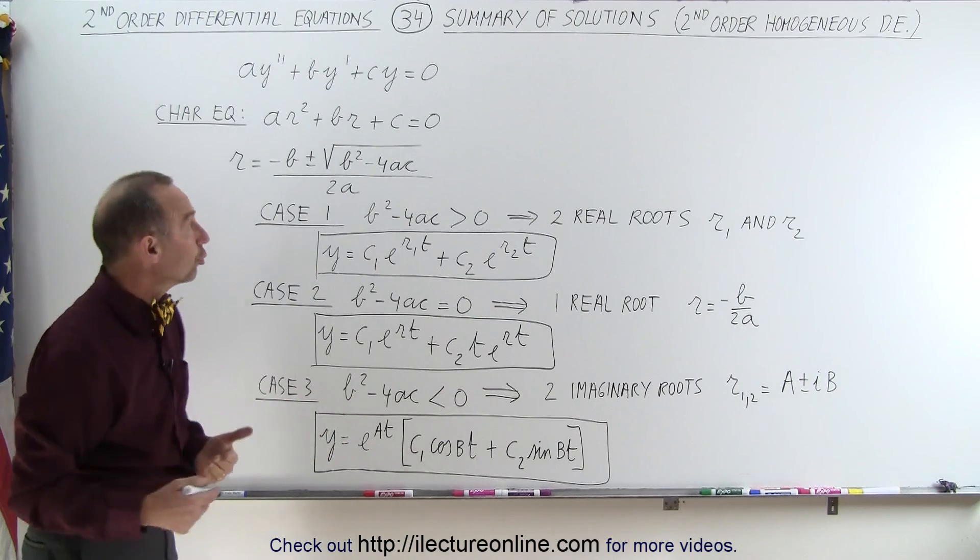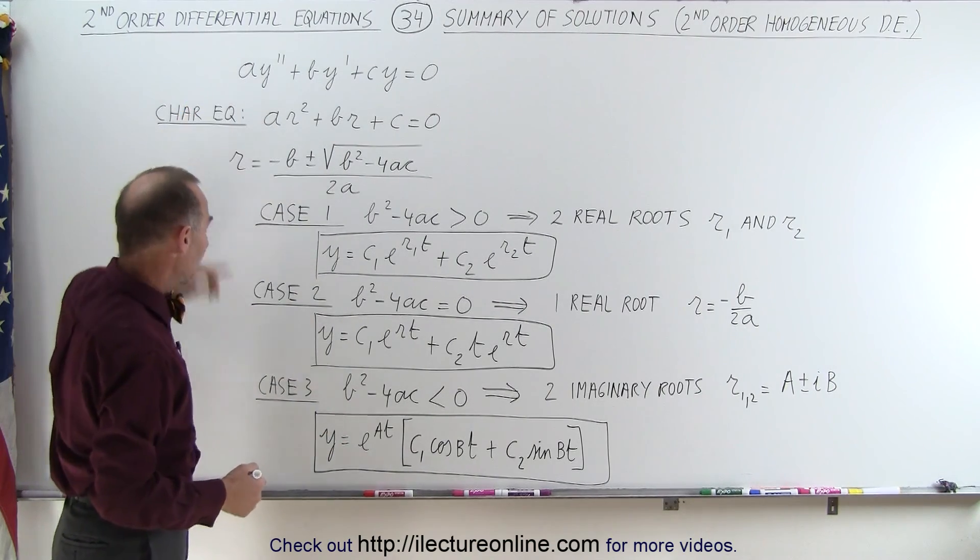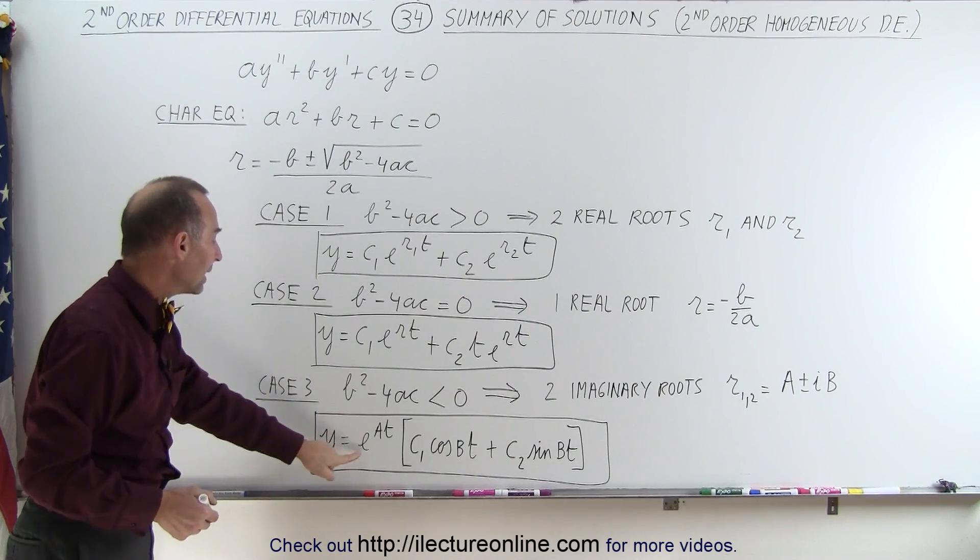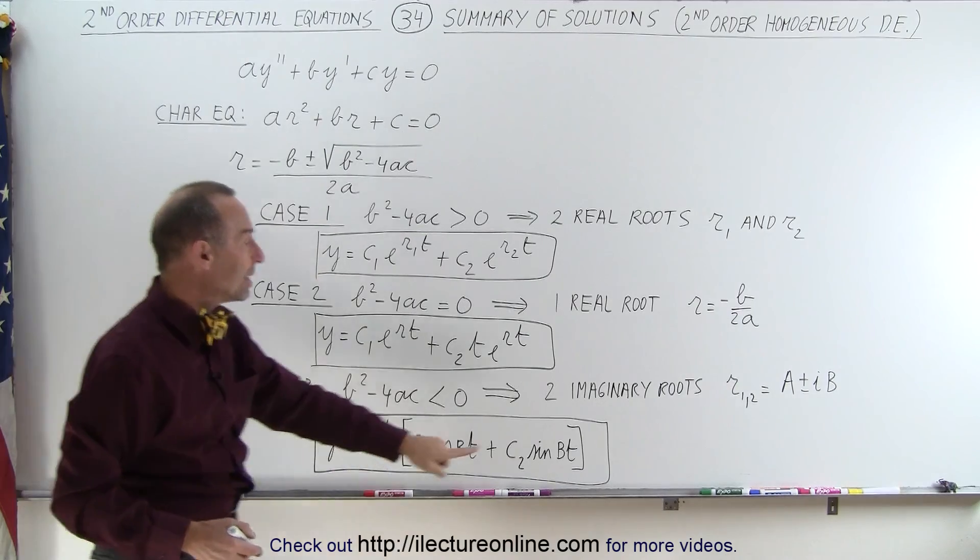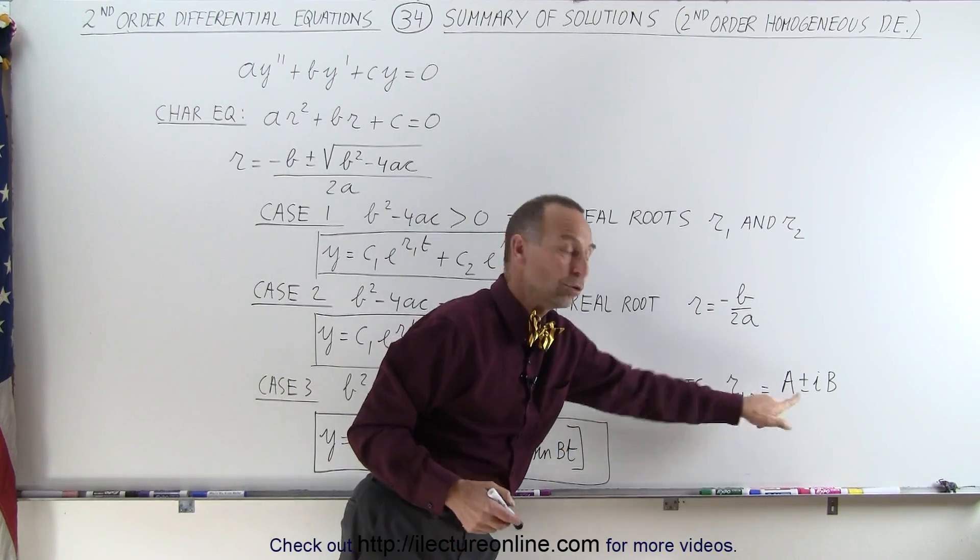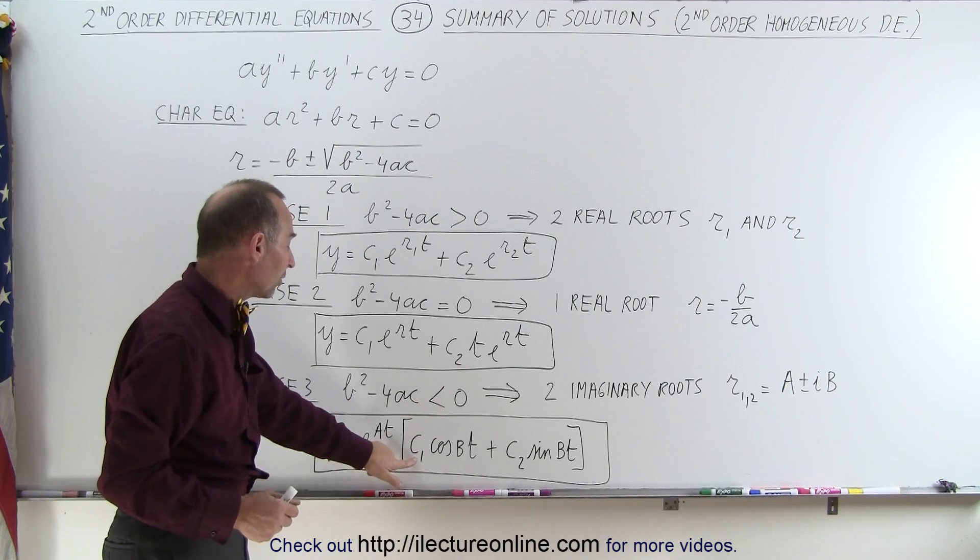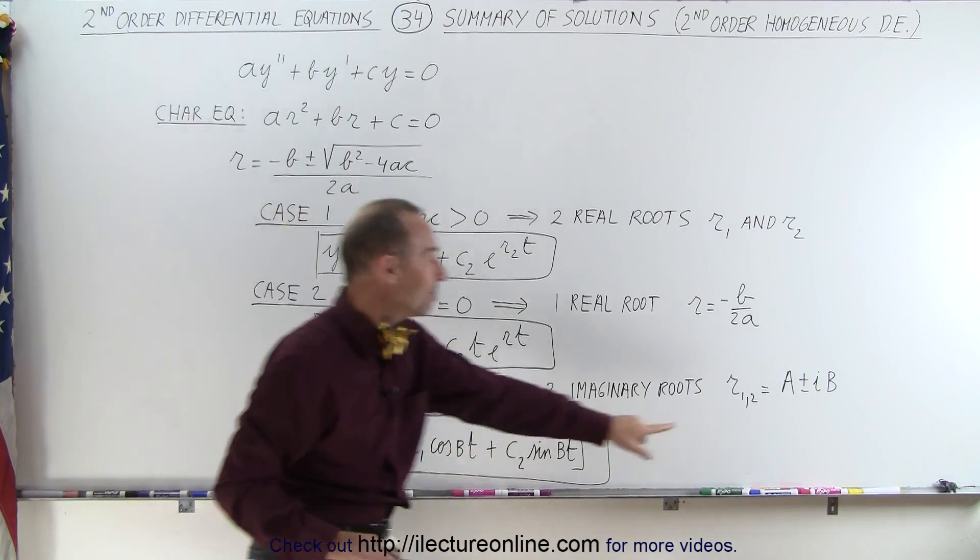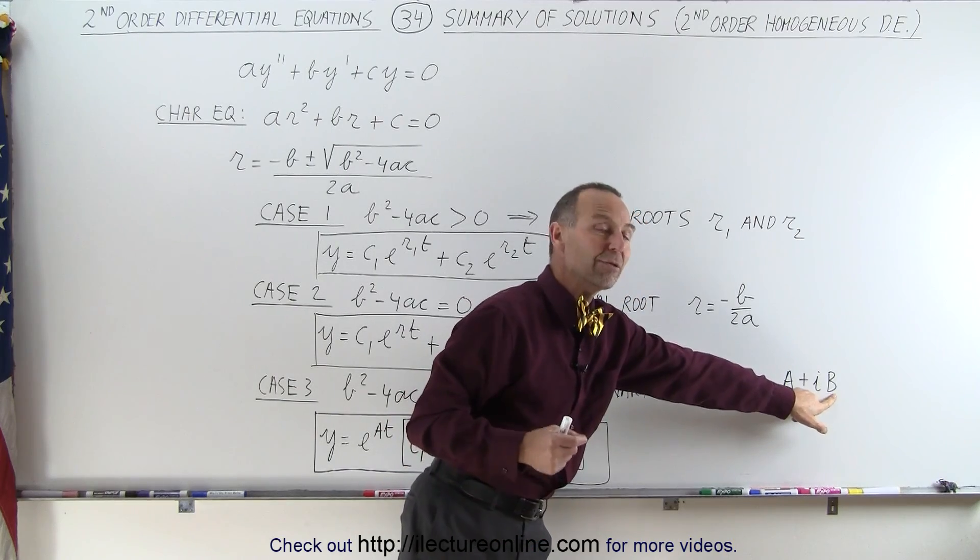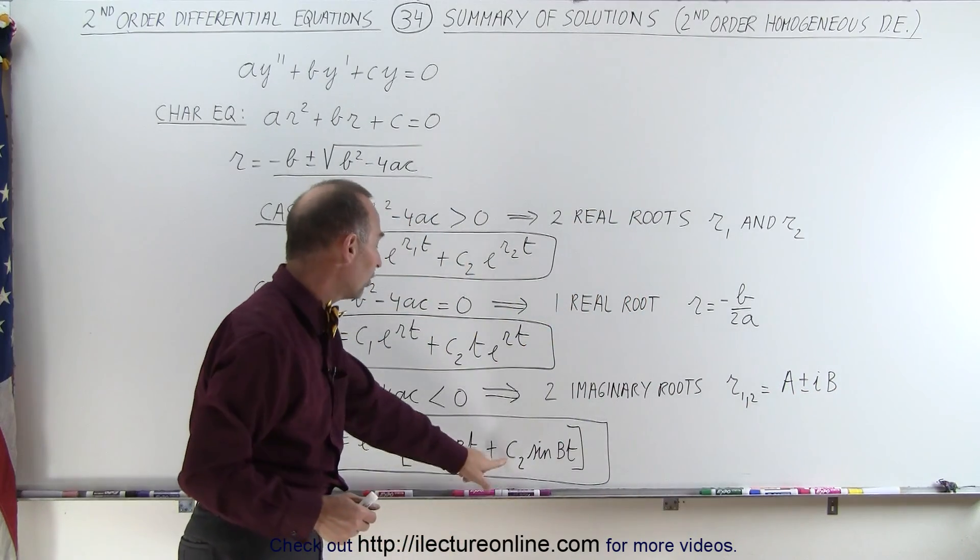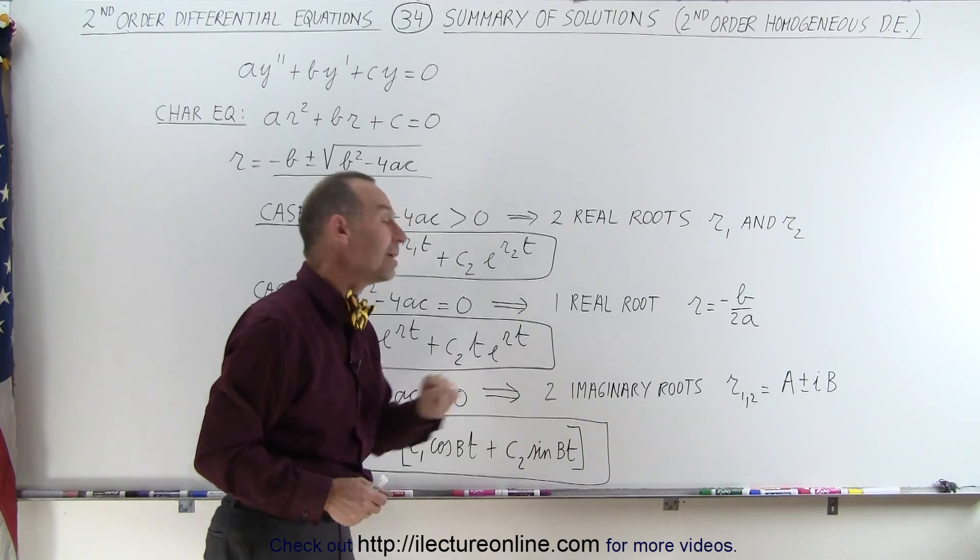Then the general solution to this original differential equation can be written as y = e^(at), a being the real part of the two roots, times, and then in brackets we have one constant times cos(bt), b being the value here of the imaginary part, plus another constant times sin(bt).